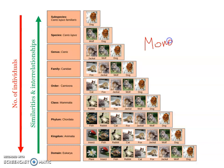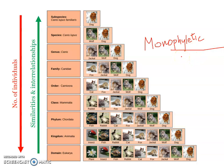A monophyletic genus means the same single genus may contain more than one species. A monophyletic family means the family may contain more than one genus. That is how a monophyletic group is defined.